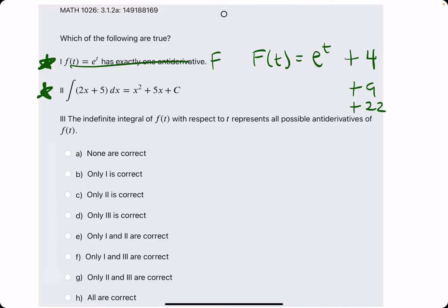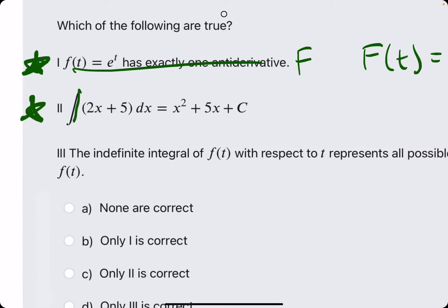So, let's move on to number two. The integral, in other words, the indefinite integral, of 2x + 5 dx is x² + 5x + C. So, the question is, if we took the derivative of this, do we get this?